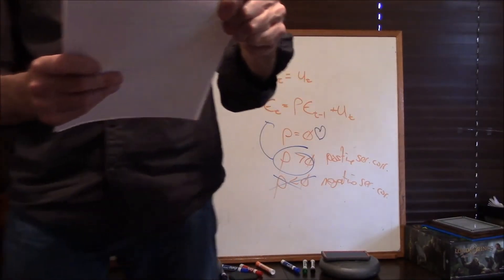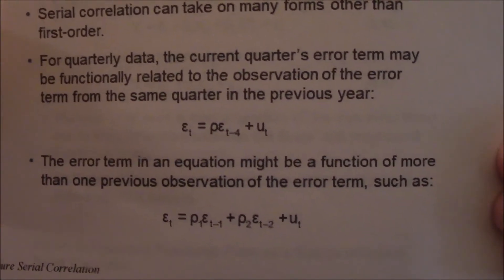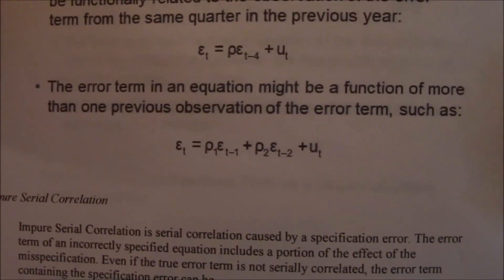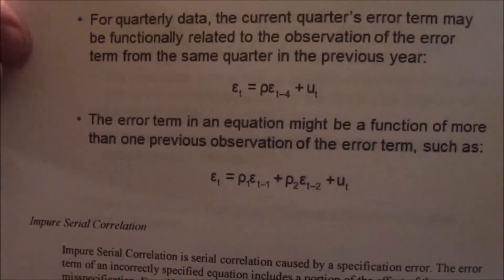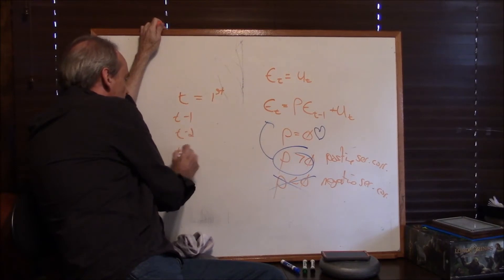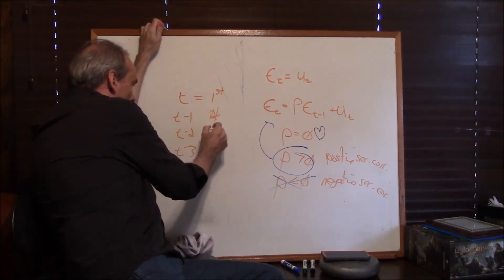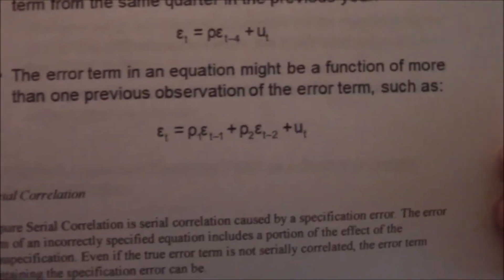Serial correlation can take on many forms other than first-order. Here's one for quarterly data where the error might be related to the same quarter of the previous year — so related to something four time periods ago: t-minus-1, t-minus-2, t-minus-3, t-minus-4. It may also be a function of one or more of the previous periods, which is a real pain to detect, though we have some methods.